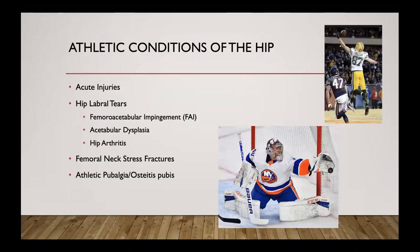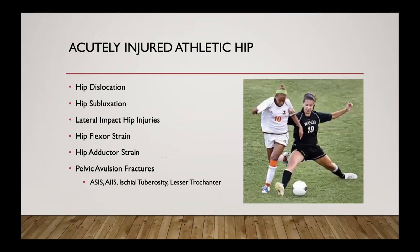Athletic conditions of the hip range from acute injuries to chronic conditions like a hip labral tear based on underlying bony abnormalities, whether it's femoroacetabular impingement, acetabular dysplasia, or early hip arthritis. Also worth mentioning are femoral neck or other pelvic stress fractures, as well as athletic pubalgia or osteitis pubis, all of which can be causes for groin pain. In the acutely injured athletic hip, always think of hip dislocation, subluxation, lateral impact hip injuries, hip flexor or adductor strains, and pelvic avulsion fractures.